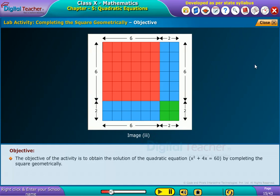The objective of the activity is to obtain the solution of the quadratic equation x² + 4x = 60 by completing the square geometrically.